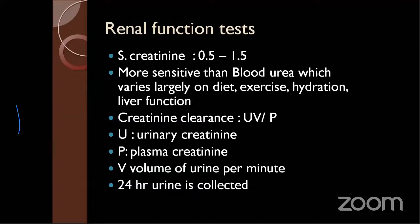Coming to the renal function test. The most sensitive test is serum creatinine — any slightest deviation will reflect impaired renal function. Why is it more sensitive than blood urea? Because blood urea is highly variable — it changes with dehydration, high protein diet, exercise, or rapid diet changes, making it not reliably specific. We use serum creatinine as the most sensitive investigation. There is also creatinine clearance, which is more specific than urea.